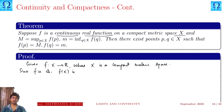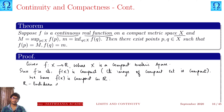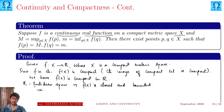Let us move to the theorem. Here we are given that f is a continuous real-valued function on a compact metric space X. So f is a mapping defined from X to ℝ, where X is a compact metric space. Since f is continuous, f(X) is compact — using the fact that the continuous image of a compact set is compact.